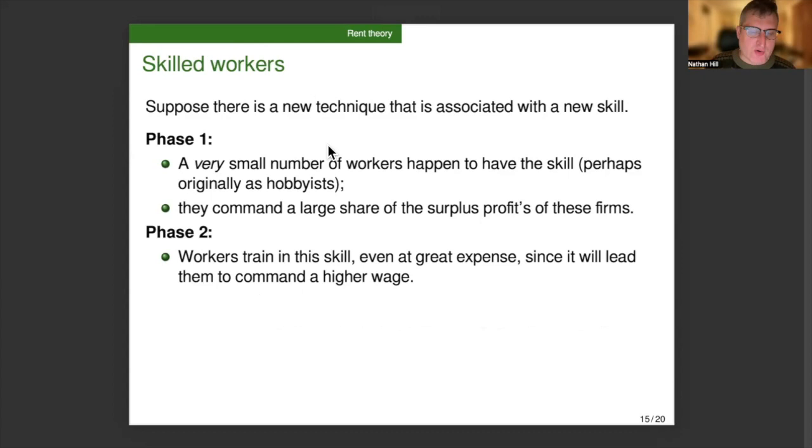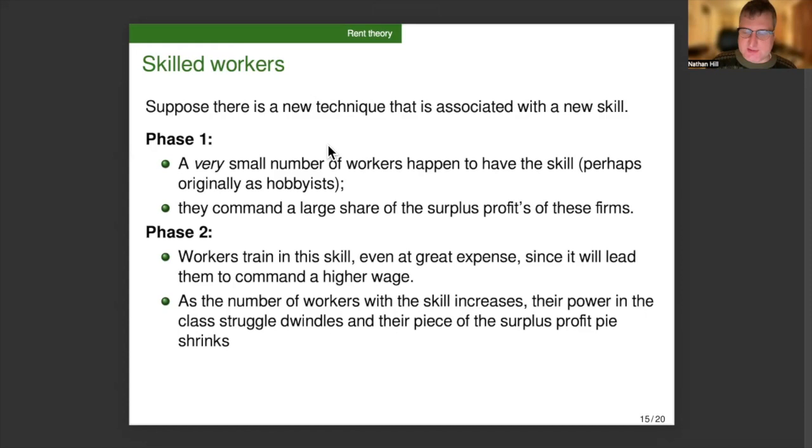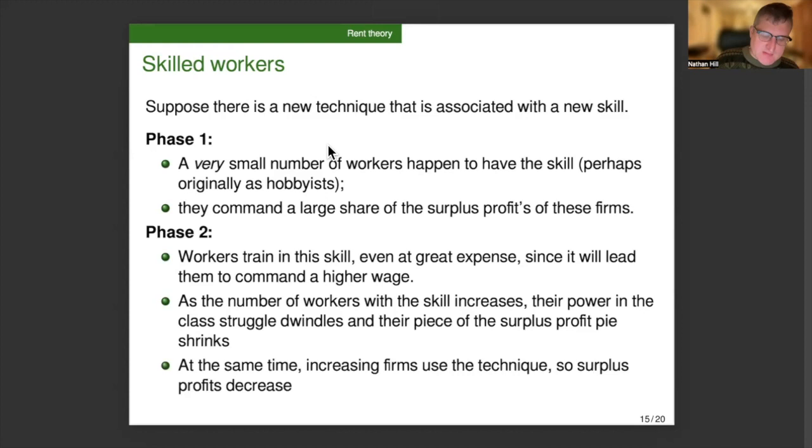In phase two, workers train in this skill, even at great expense, since they think it will lead them to command a higher wage. They see the workers from phase one getting those high wages. Now, as the number of workers with the skill increases, their power in the class struggle between labor and capital dwindles, and their piece of the surplus profit pie shrinks, because capital finds it easier to locate these skilled workers. They are competing against each other. So the amount of the surplus profit that the firm feels like it makes sense to give to the workers is smaller. And then at the same time, the increasing number of firms using the technique also means that the surplus profits decrease. So as the new technique becomes more prevalent, the advantage of having it goes down.